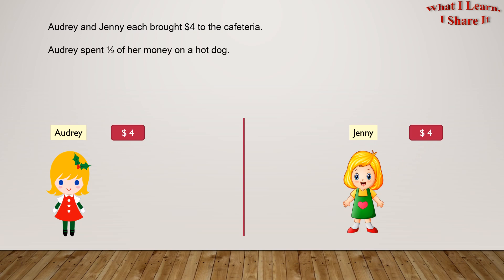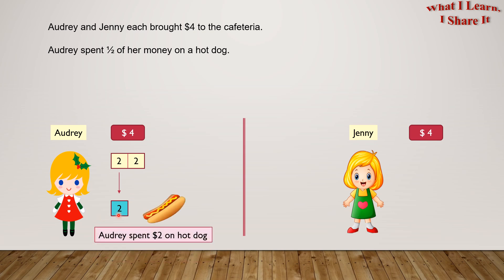Audrey spent half of her money on a hot dog. If we divide Audrey's money into two parts, we will get two dollars and two dollars. This shows half of four dollars is two dollars. So Audrey spent two dollars on a hot dog.